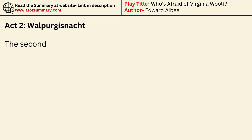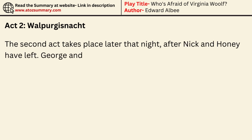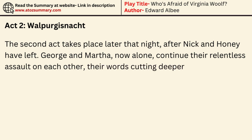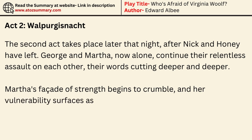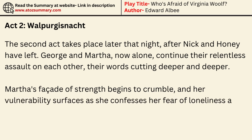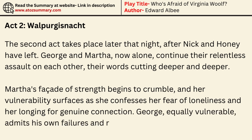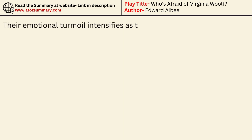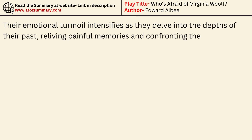In Act 2, Walpurgisnacht. The second act takes place later that night, after Nick and Honey have left. George and Martha, now alone, continue their relentless assault on each other, their words cutting deeper and deeper. Martha's facade of strength begins to crumble, and her vulnerability surfaces as she confesses her fear of loneliness and her longing for genuine connection. George, equally vulnerable, admits his own failures and regrets, revealing a man trapped in a life he never desired.